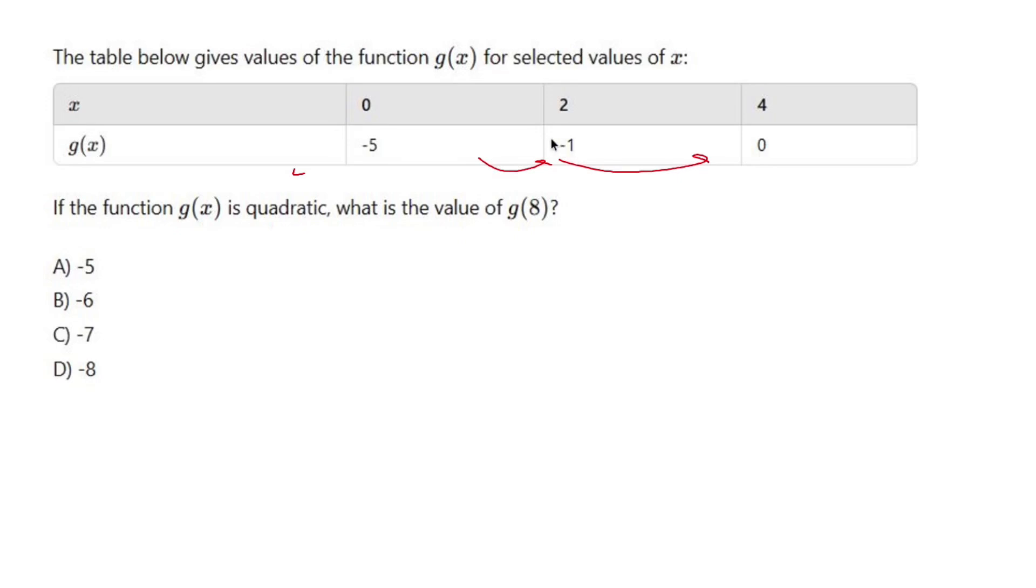So to get from -5 to -1, you add 4. And to get from -1 to 0, you add 1. So which means for the quadratic, the average rate of change is going to change by subtracting 3 every time.